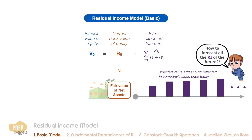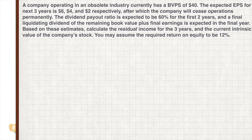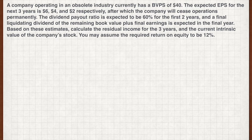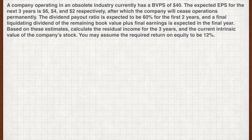How do we forecast residual income in perpetuity? We'll leave that for later. For now, let's learn the basics by studying a firm expected to stop operations in three years, giving us a finite number of residual income periods to consider. A company operating in an obsolete industry currently has a BVPS of $40. The expected EPS for the next three years is $6, $4, and $2 respectively, after which the company will cease operations permanently.